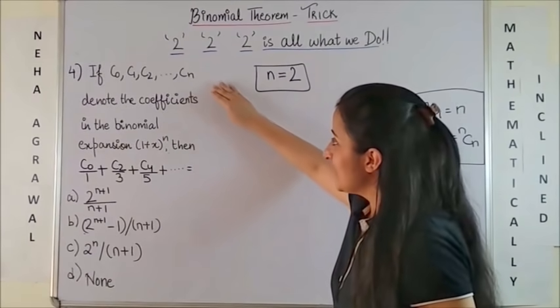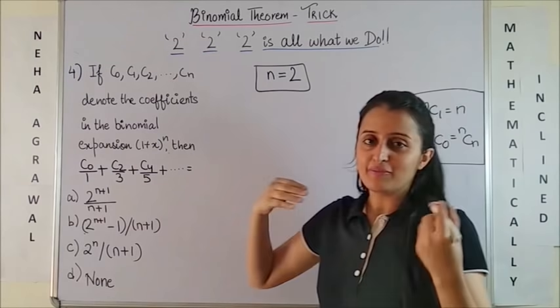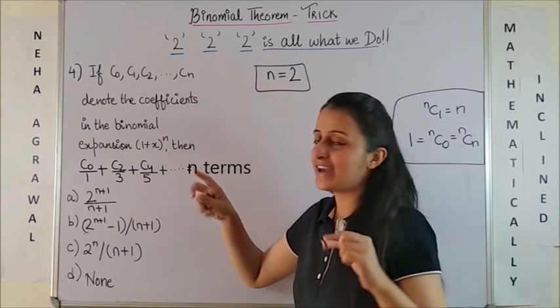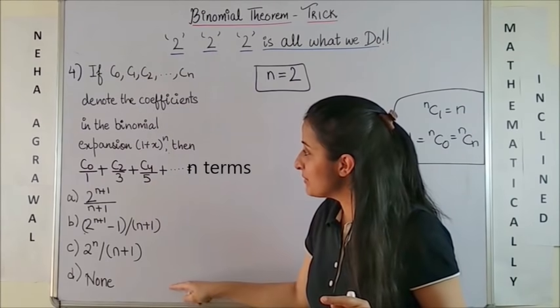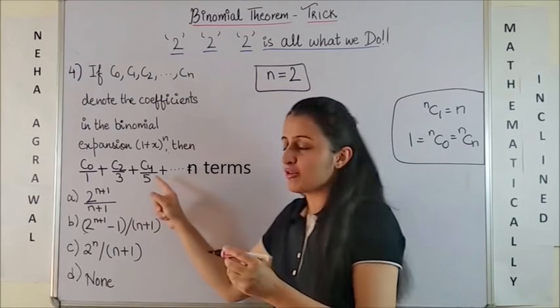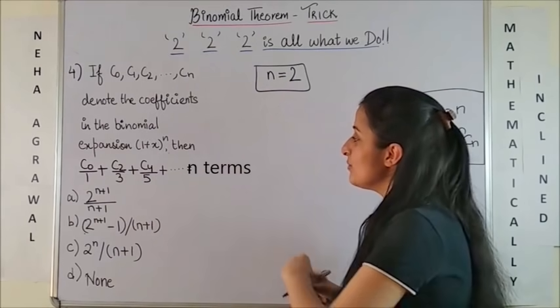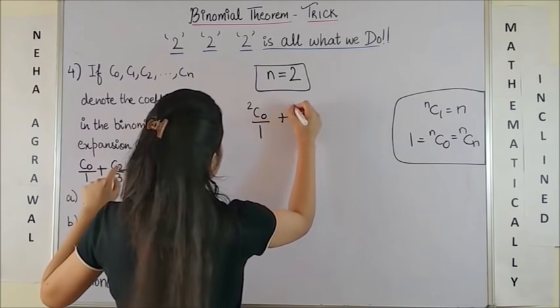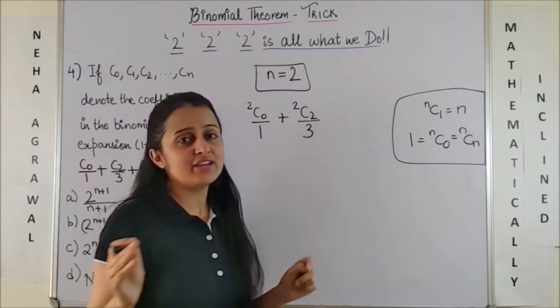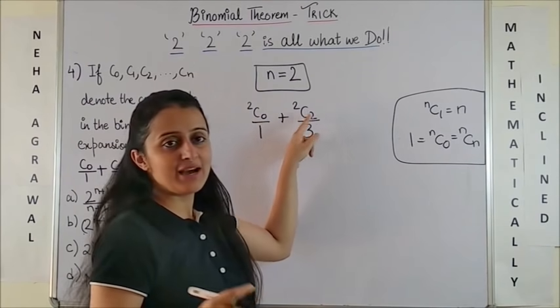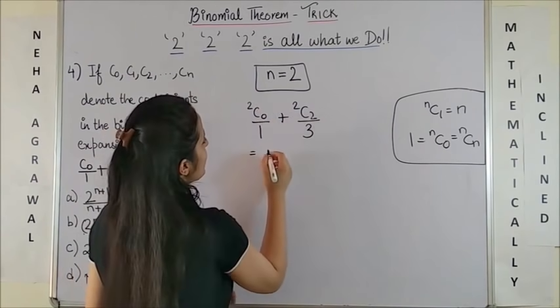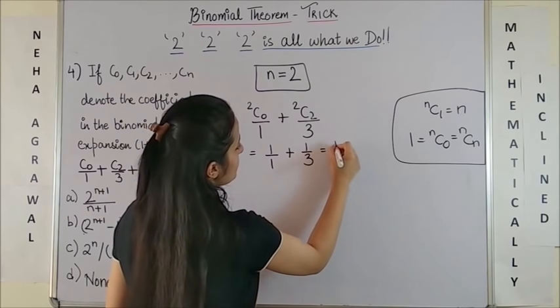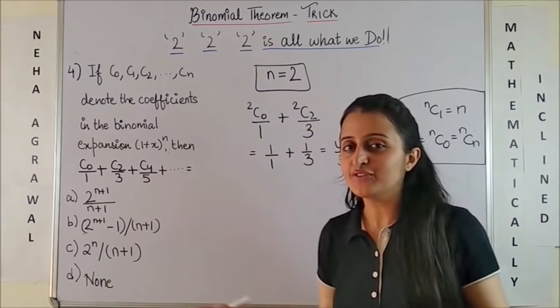Coming to the fourth one, again you have the same kind of beginning. But let's say then c0 upon 1 plus c2 upon 3 plus c4 upon 5 and so on is going to be one of these. Now obviously we are talking till end terms. Here, what happens is again I take n equal to 2. So this will be 2c0 plus 2c2 by 3. And this time we are lucky we don't have to go beyond because these two match right in the first two terms. So this gives us 1 plus 2c2 is again 1. So 1 plus 1 by 3, the answer is 4 by 3.